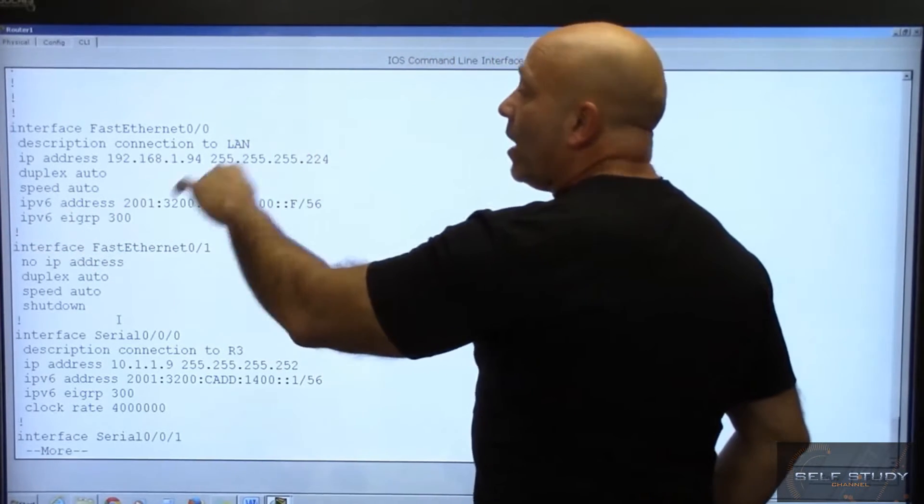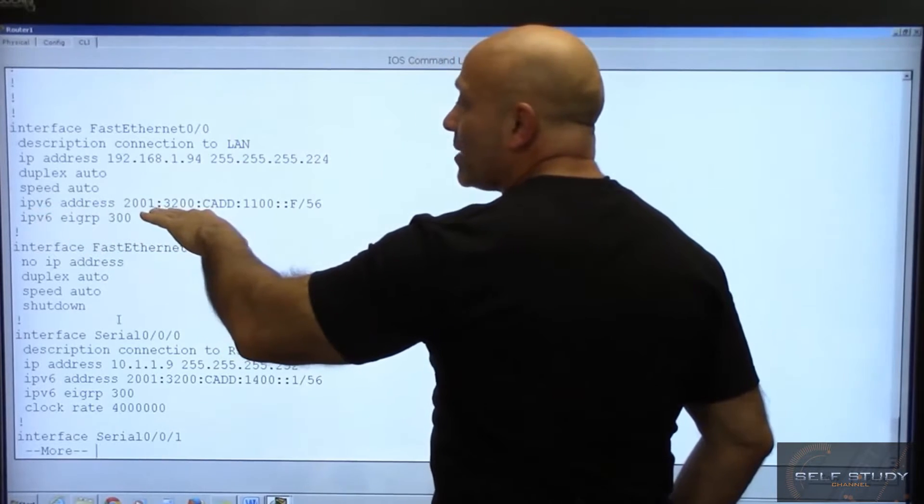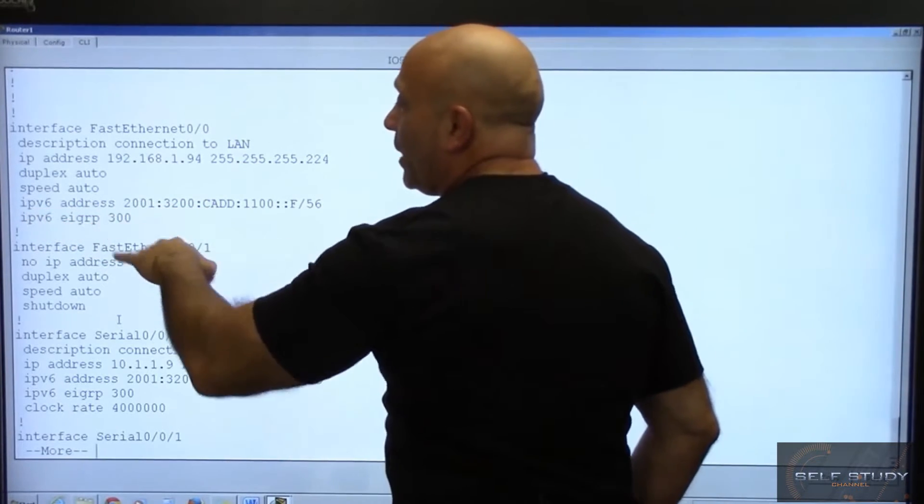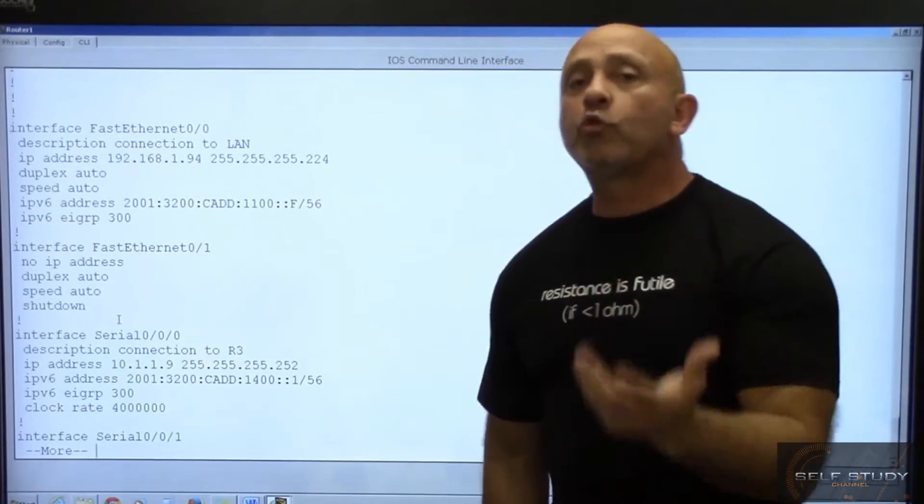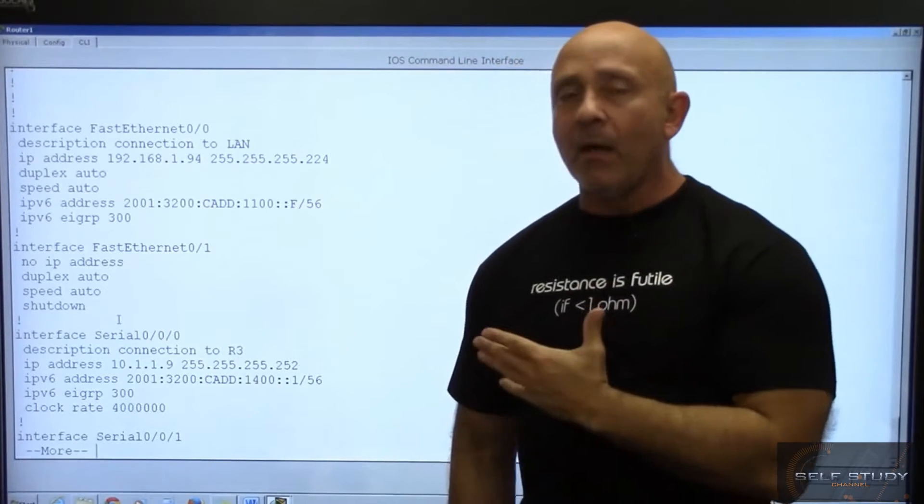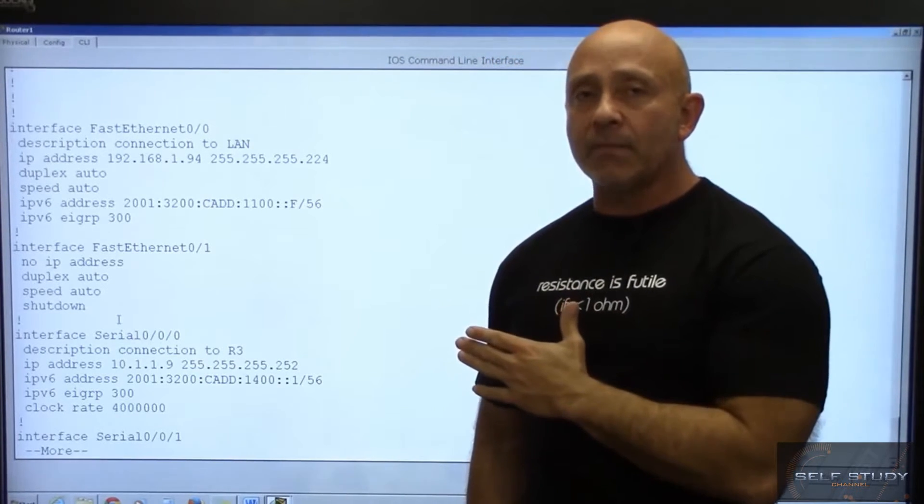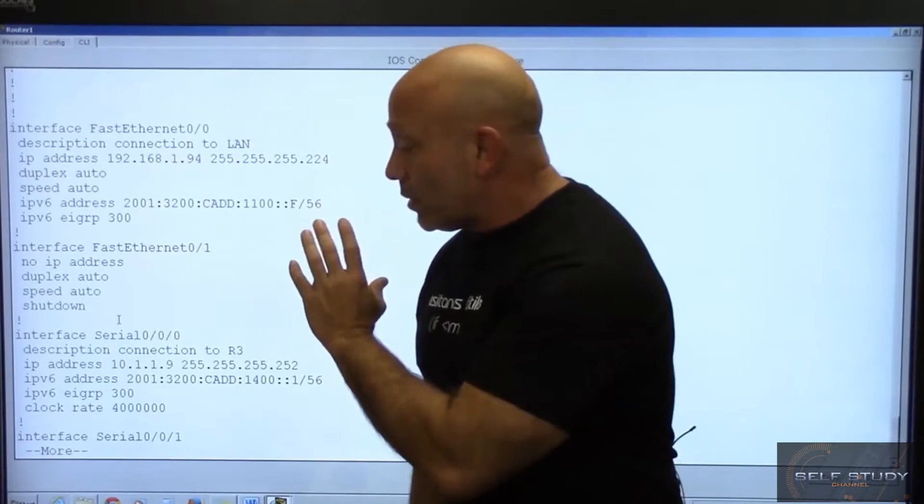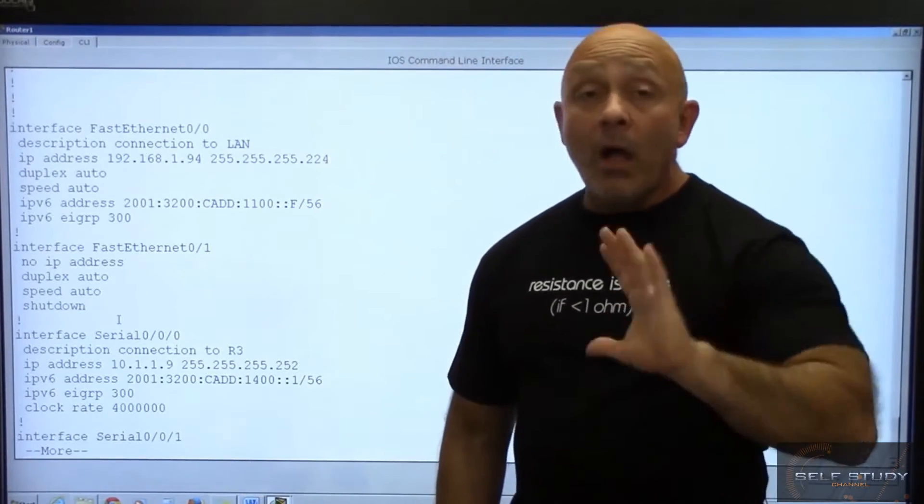You can tell already that in the IPv6 we're running EIGRP 300. That is what's great about IPv6. Since you configure on the interface, all I really have to do is go into the interface, IPv6 EIGRP 300, boom, and it does the configuration.